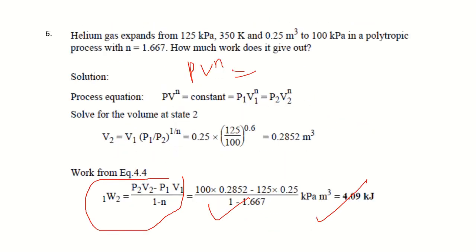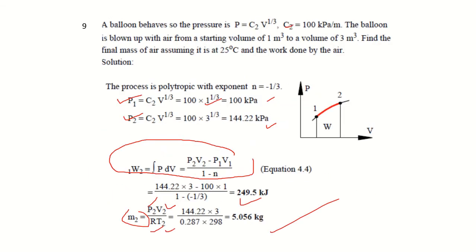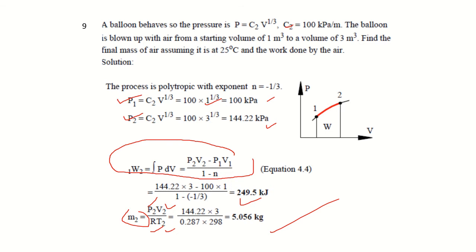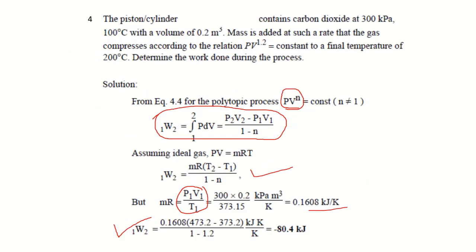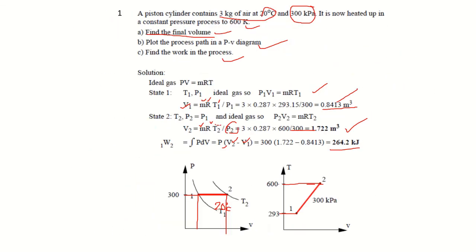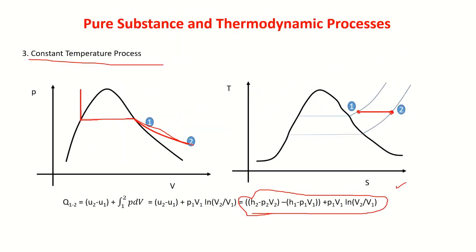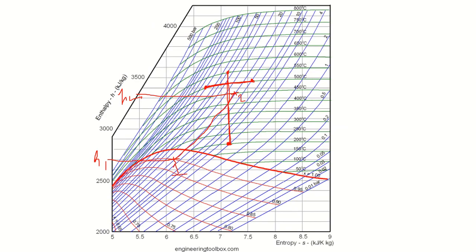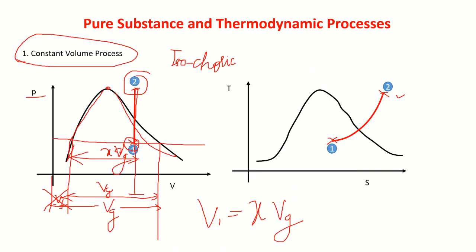These problems give an idea of how thermodynamic processes can be represented on PV and TS coordinates, and how work as well as heat interactions can be determined. There are many such examples available in reference books, and it is advised to solve such examples. We will look into some more examples in the next session. Thank you very much.